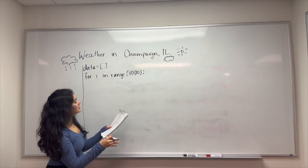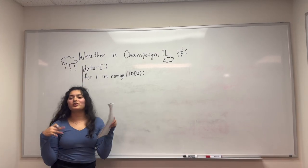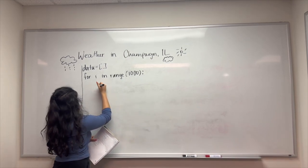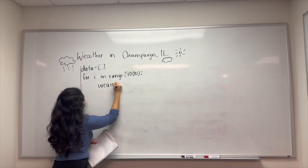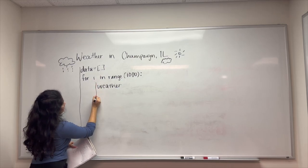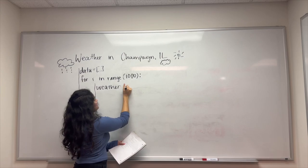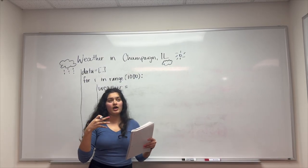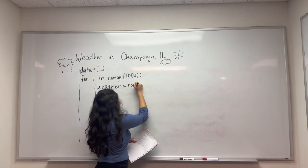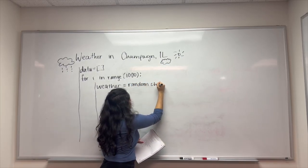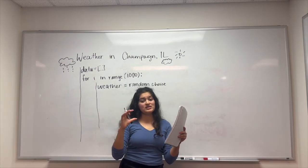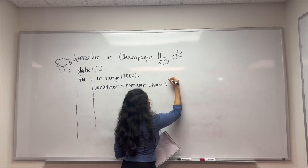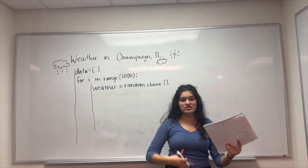So from here we'll simulate the real-world situation. The problem asks you to make sure that 'weather' is the name of the column. So we're going to name our variable here weather, on a new line. We'll do weather equals random.choice — random.choice always takes a set of parentheses. Because we're listing multiple things, we're going to add square brackets inside.